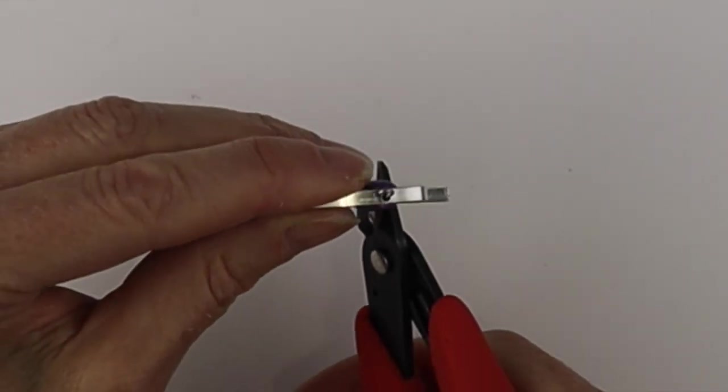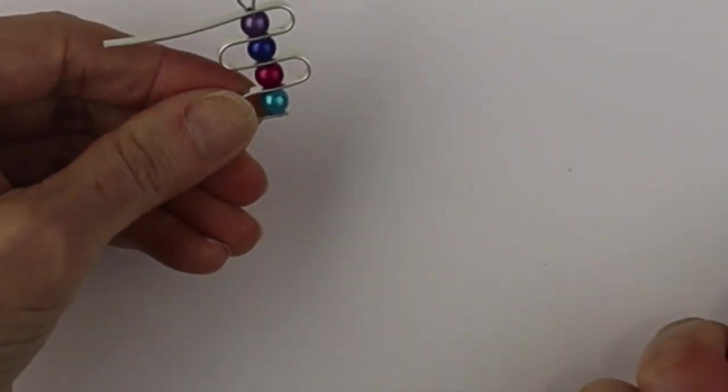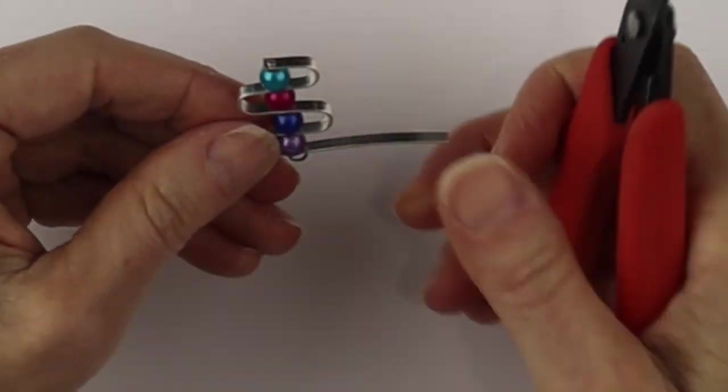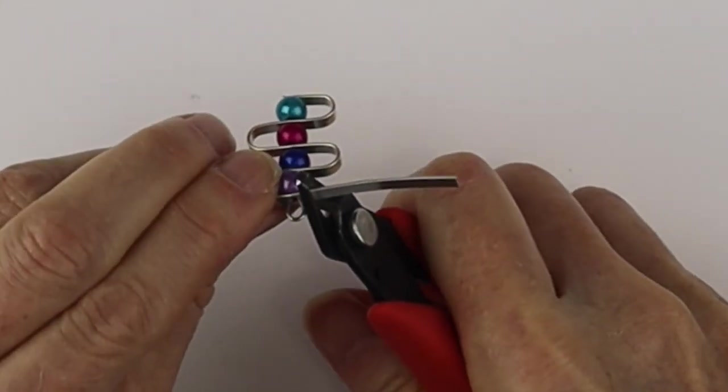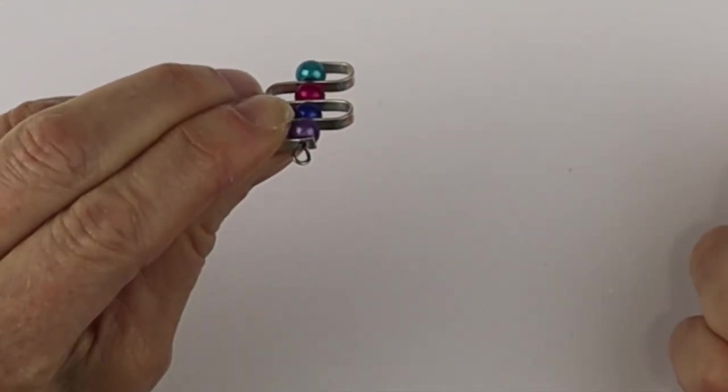Once we have that done, we're going to take our flush cutters and just clip off the extra wire. Just flip it around and clip the extra wire off the top.